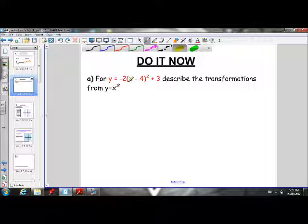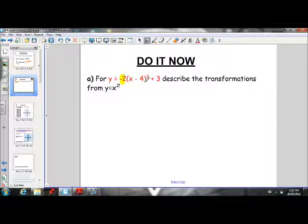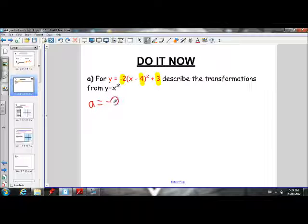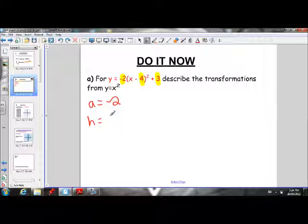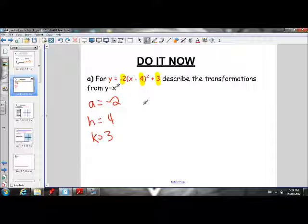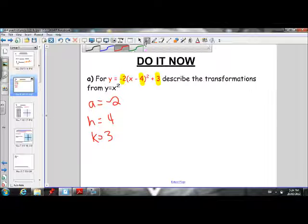We need to first pick out our a, h, and k values. There's our a, h, and k. Let's jot those down. Our a is negative 2, our h is positive 4, and our k is 3. If we're still having trouble with figuring out our a, h, and k values, especially with remembering that h is positive 4 in this instance, please go back and watch the previous lessons. Now that we have our a, h, and k values, we can describe our transformations.